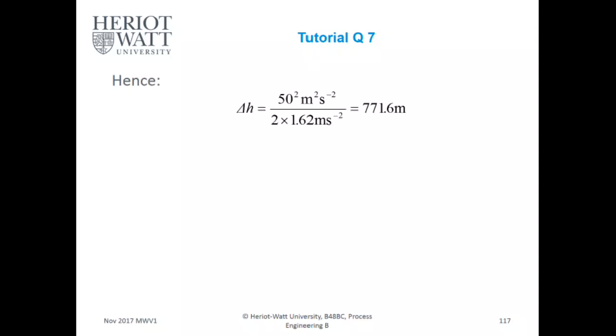And hence, you can calculate your change in height. So, your change in height at maximum potential energy. So, 50 squared over 2 times 1.62 meters per second squared. So, 771.6 meters.